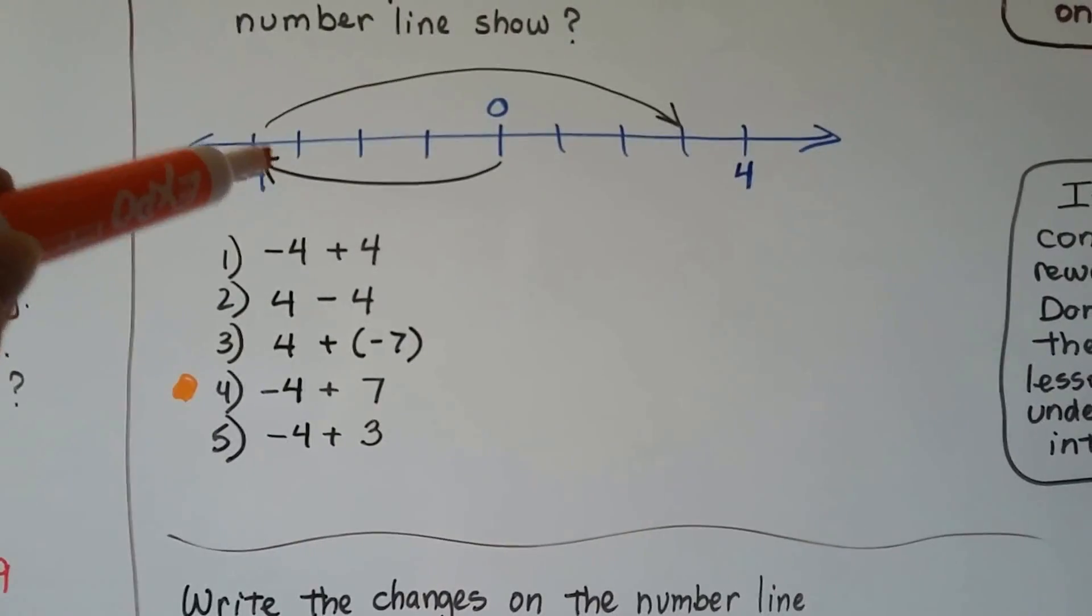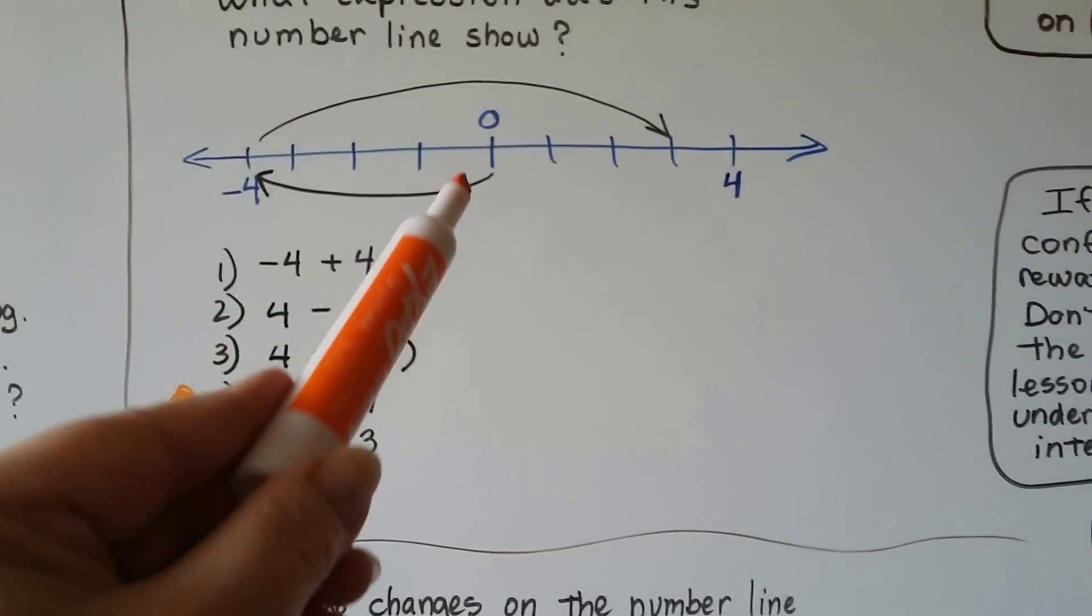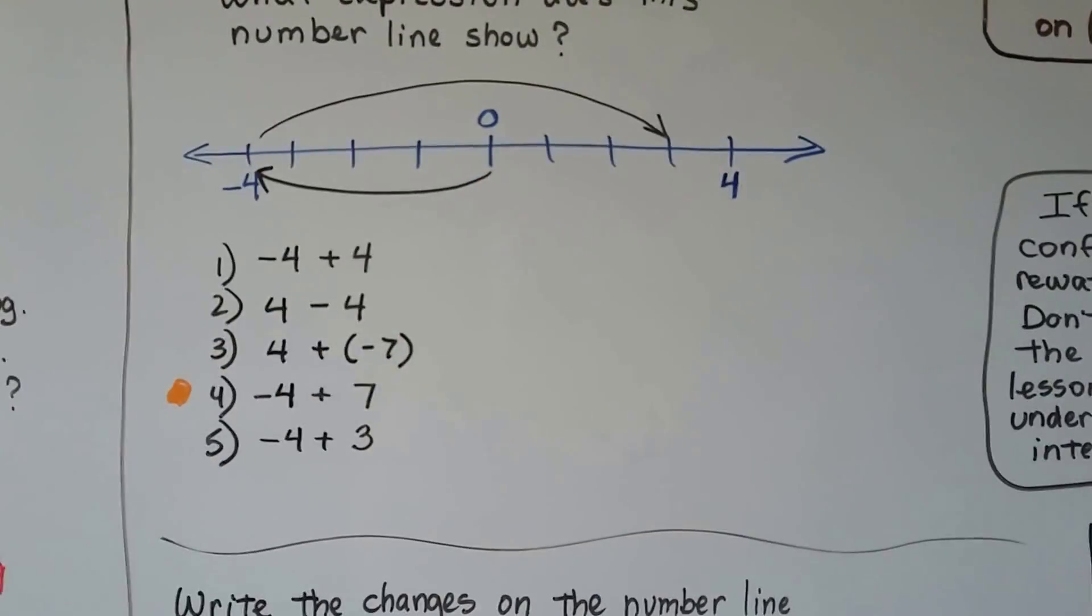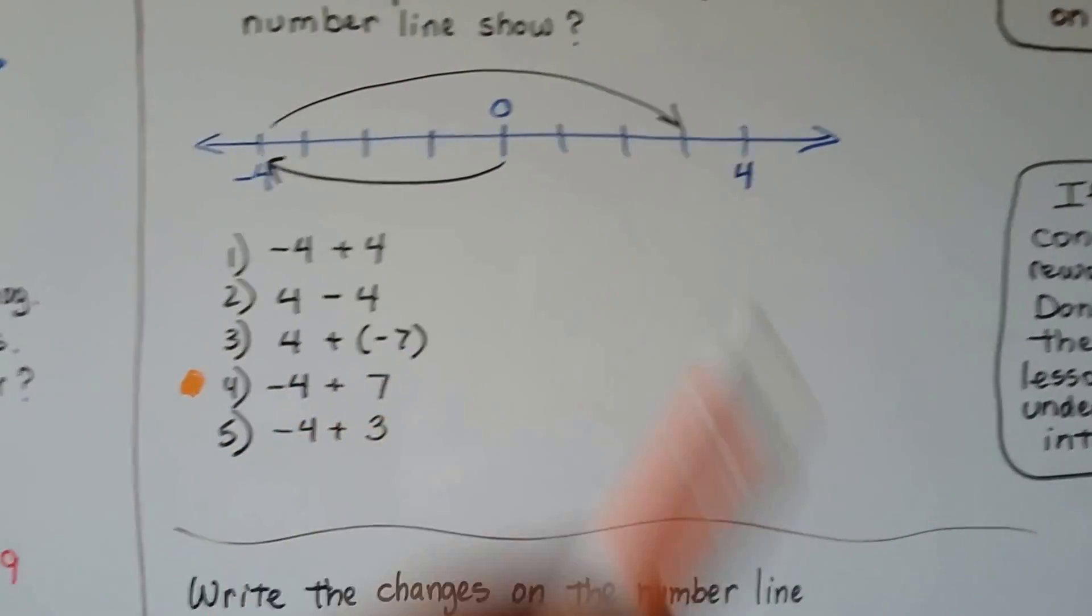It didn't start here because it's got an arrow pointing to that. This is where it started. And it didn't start here because the arrow is pointing to that one. So it's not leaving. It's coming to that one.